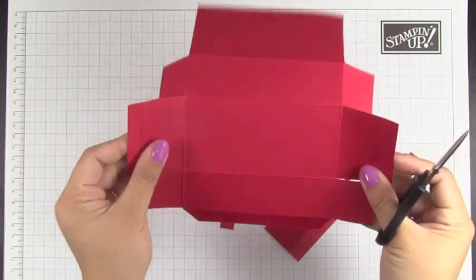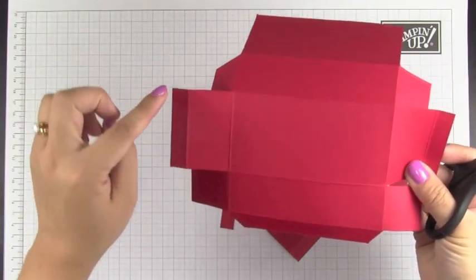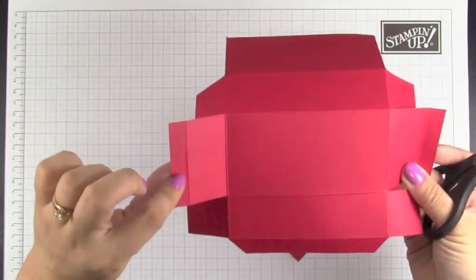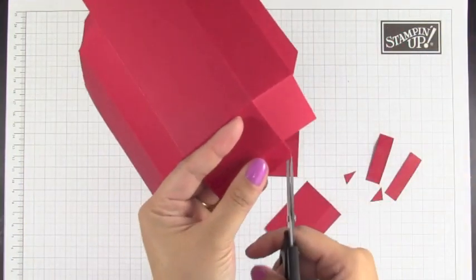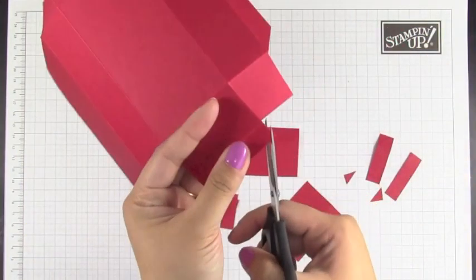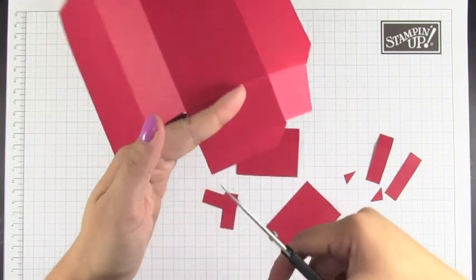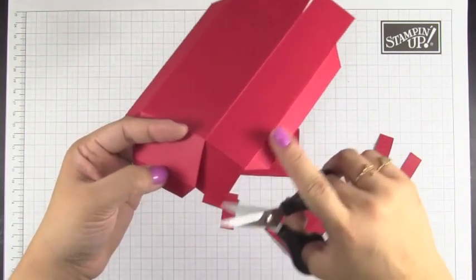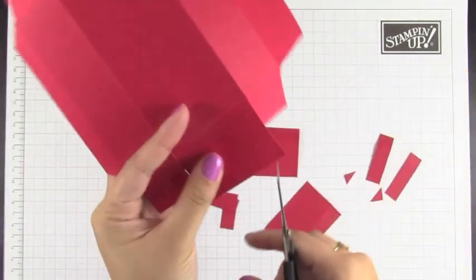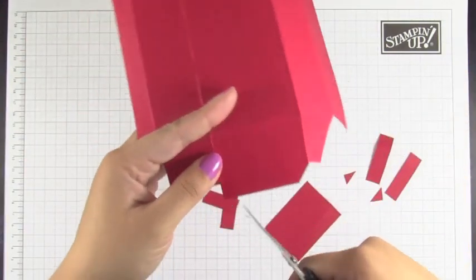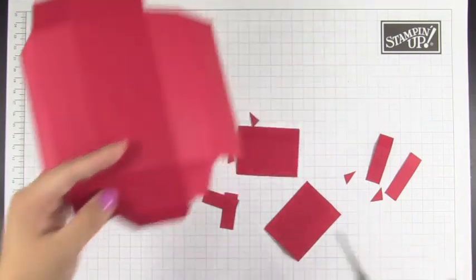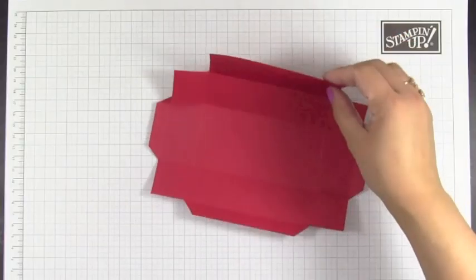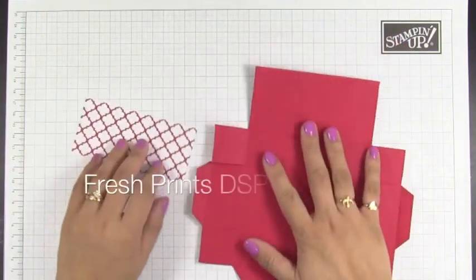All right, okay, so the next thing is that see how we have this half an inch score line here? We're going to cut that in an angle so that when we close our box it doesn't get into this side here. Okay, so I'm just going to clean up my surface.